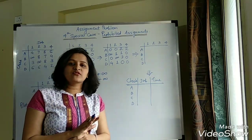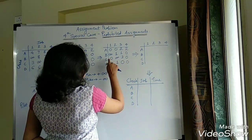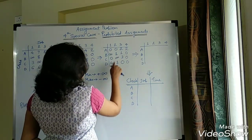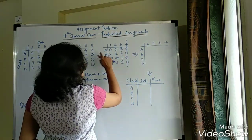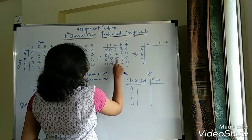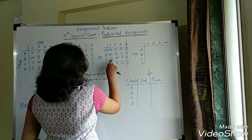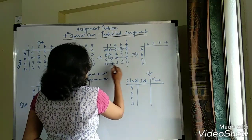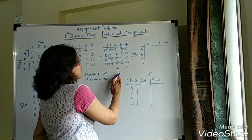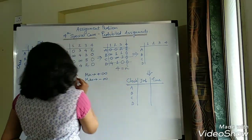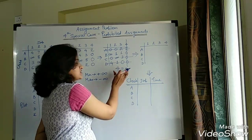Now let's draw the minimum number of lines to cover all the zeros. Checking row-wise: 2 zeros, 1, 2, 2. Column-wise: 2, 1, 1, 3. The last column has 3 zeros — cover that first. Continuing, we find that a minimum of 4 lines are required to cover all zeros. Since 4 equals N (our 4×4 matrix), the solution lies here.